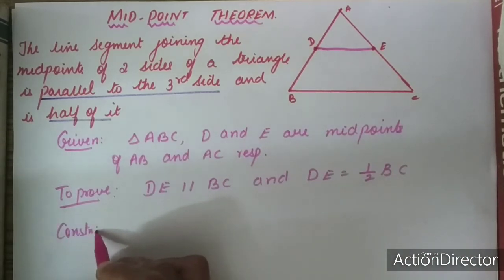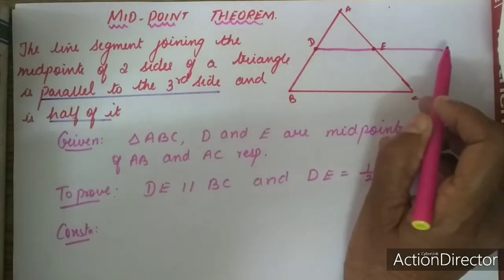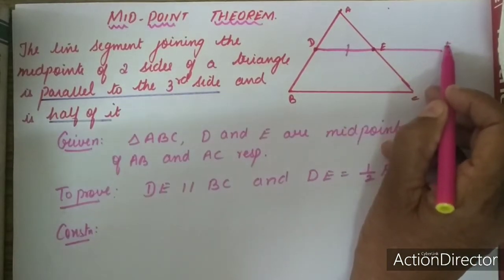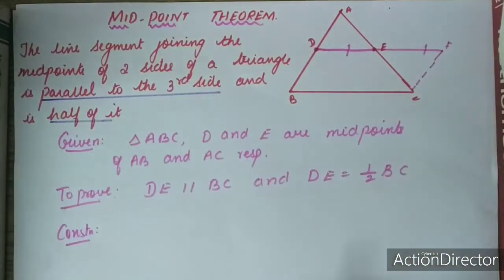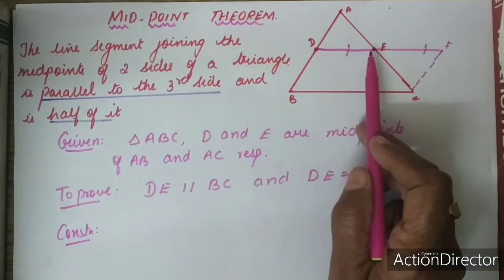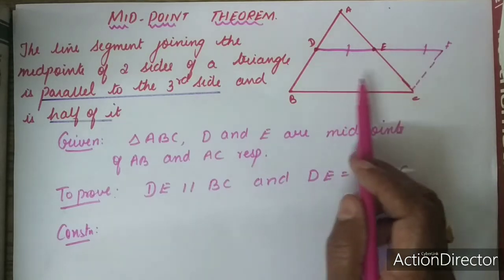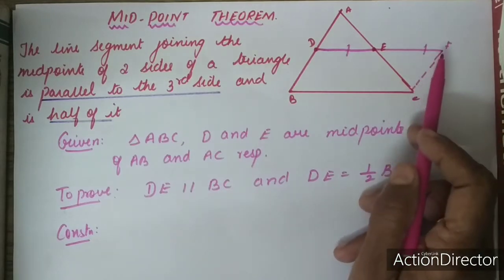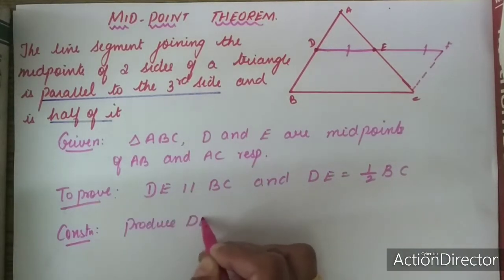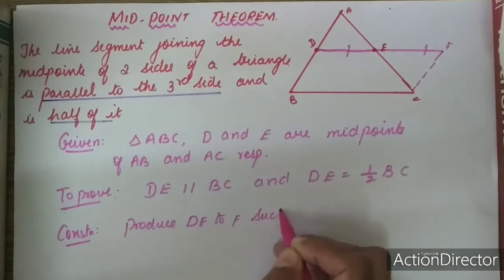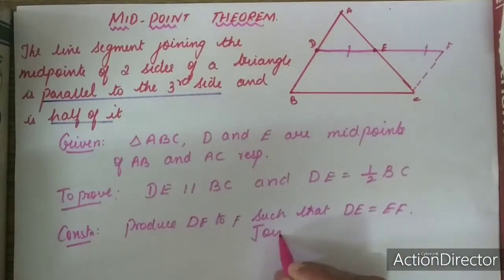For proving this, let us do a small construction. We are going to produce DE to DF such that DE is equal to EF, and also join CF.